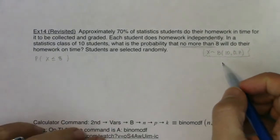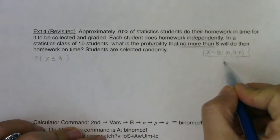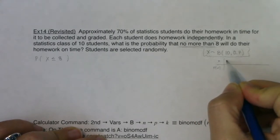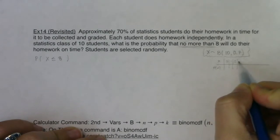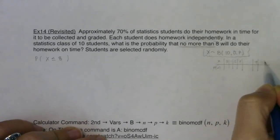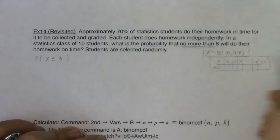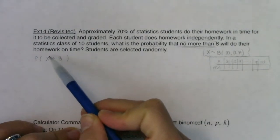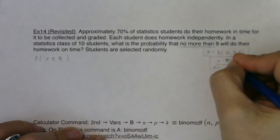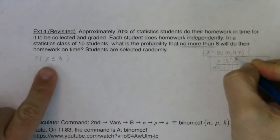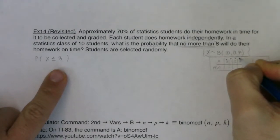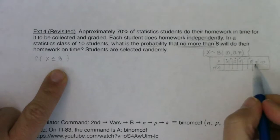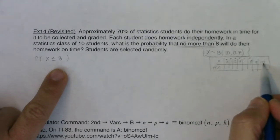If I had made a table with X against P(X), X would go from zero up to 10. When they ask for P(X ≤ 8), I need to include zero, one, two, three — everything up to eight. I just don't want to include nine and ten, because nine is not less than or equal to eight, and ten is not less than or equal to eight.